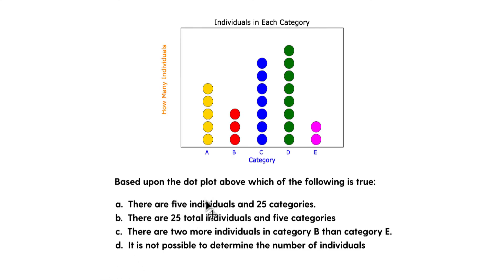Here is a fairly easy question that I put together just to give you an example of a dot plot. The question is based on the dot plot above, which of the following is true? Before we dive into this, let's just look. Each dot represents an individual or a person. So it says individuals in each category. We don't know what the categories are. They're A, B, C, D, or E.